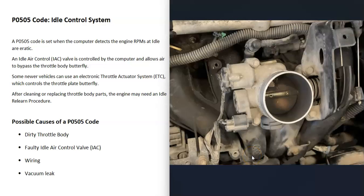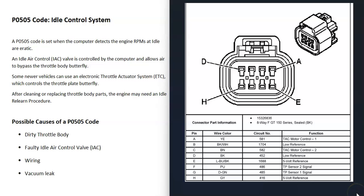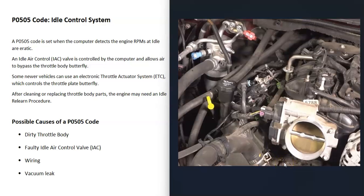Keep in mind that if anything is wrong with the wiring — an open circuit, a short, or a bad connection — it will cause the same symptoms as a bad valve. The wiring can vary: there could be three-wire, four-wire, or eight-wire connectors depending on the vehicle year and make. You'll need to get a wiring diagram for your specific vehicle, but basic things to check are voltage and good grounds.